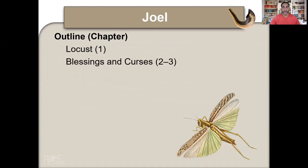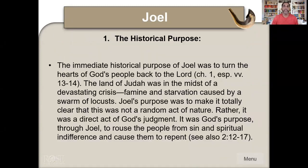Chapter 1 covers the locusts devouring the land, then blessings and curses in chapters 2 to 3. The historical purpose of Joel was to turn the hearts of God's people back to the Lord. The land of Judah was in a devastating crisis — famine and starvation caused by a swarm of locusts. Joel's purpose was to make it totally clear this was not a random act of nature, but a direct act of God's judgment, to rouse the people from sin and spiritual indifference and cause them to repent.